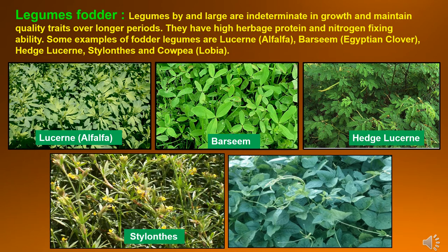Now legume fodder. Legumes by and large are indeterminate in growth and maintain quality traits over longer periods. They have high herbage protein and nitrogen fixing ability. Some examples of fodder legumes are lucerne which is also known as alfalfa, barseem which is Egyptian clover, hedge lucerne, stylosanthes and cowpea lobea.